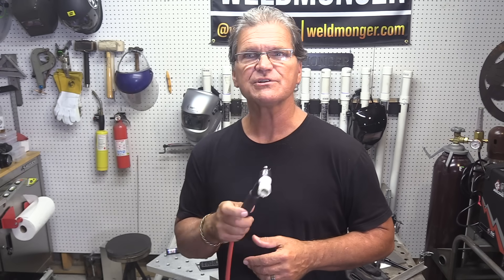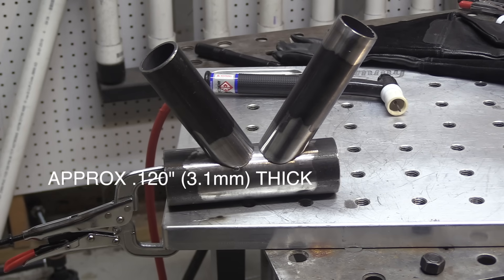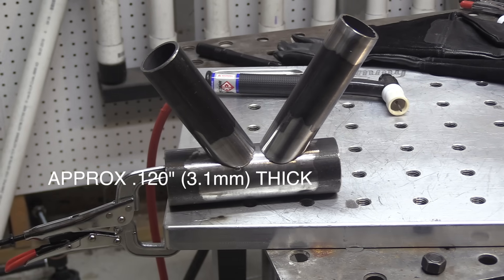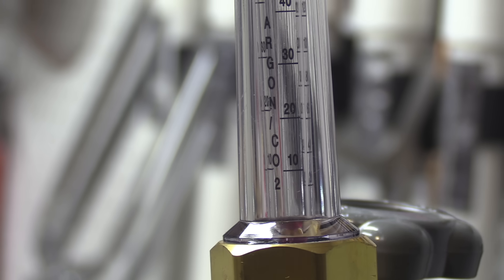We're gonna be welding some coped steel tubing today with this cup and also showing some common TIG welding mistakes. I've got some cope tubing here that's roughly 120 thousandths thick, so the one amp per one thousandths rule sets me at 120 amps and I'm gonna be pretty much full pedal.